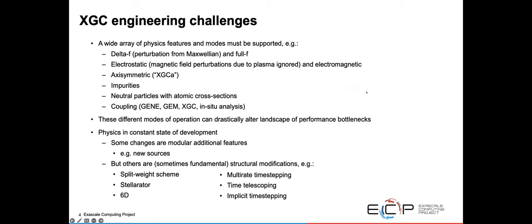There's a number of engineering challenges with working on XGC. There's a wide array of physics features and modes that must be supported. When trying to optimize to run on any new machine, we have delta F or full F modes, electrostatic where magnetic field perturbations due to the plasma are ignored, and electromagnetic where they're included, axisymmetric versions, impurities, neutral particles, and coupling. All these different modes can drastically alter the landscape of performance bottlenecks. On top of that, we're constantly developing new physics. While some are modular additions, others are more structural modifications. Any attempt to develop the code for a specific architecture must keep in mind optimizing future developments.